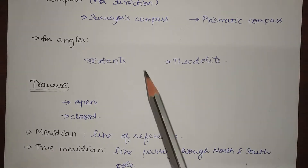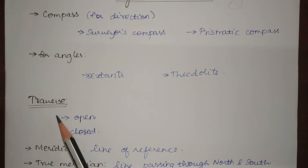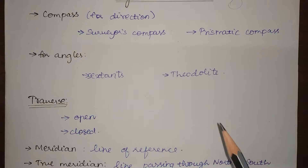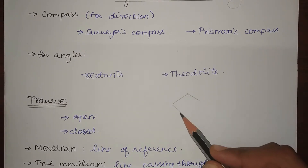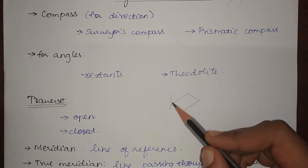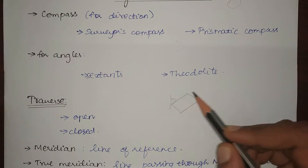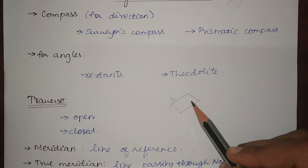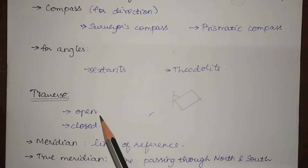When we use a compass, there is another term involved: traversing. Traversing is that type of survey in which a number of connected lines form a network. In that network, the direction of each line and the length of each line are known. This is called traversing, and we use traverses to solve many problems.